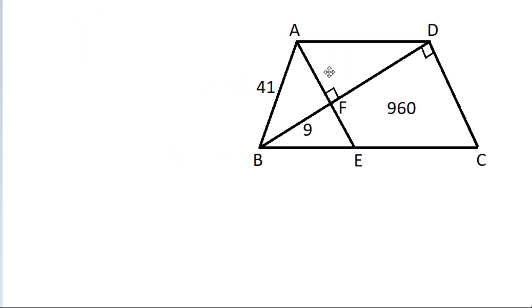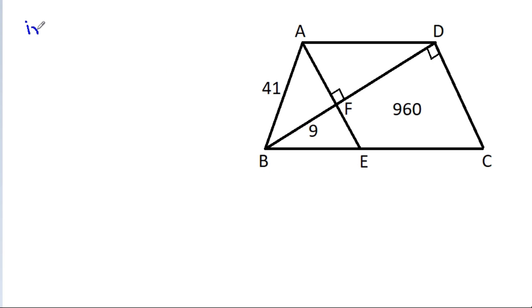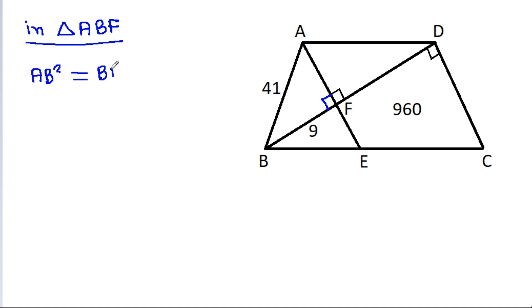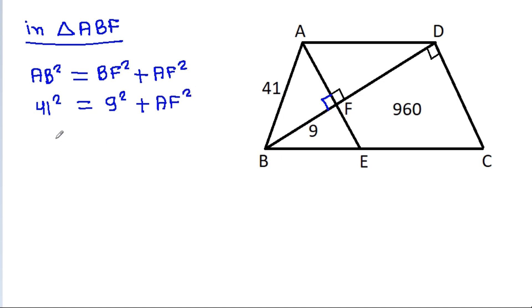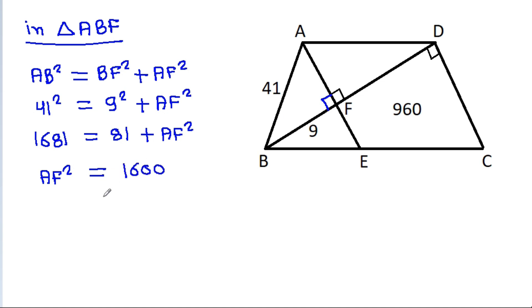In triangle ABF, this angle is 90 degrees. So AB squared will be equal to BF squared plus AF squared. AB is 41, so 41 squared equals BF squared — 9 squared — plus AF squared. 41 squared is 1681, equal to 81 plus AF squared. So AF squared will be equal to 1600, and AF will be equal to 40.